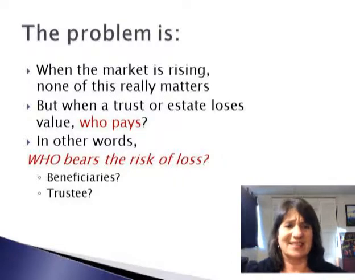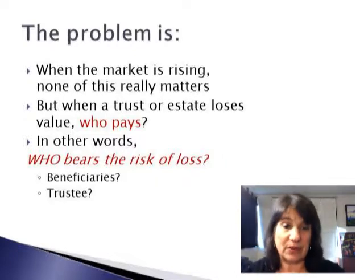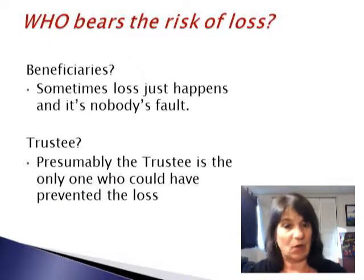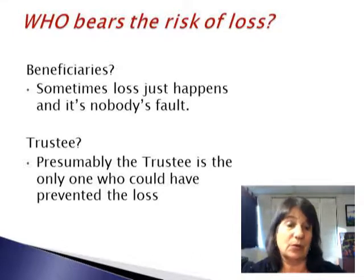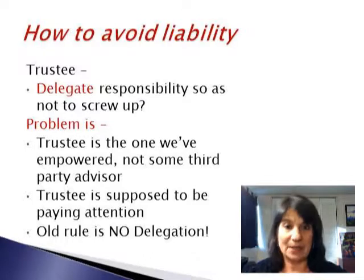The problem is when the market's rising, nobody minds if you're diversified or not. It's only when the trust or estate loses value that the question is: who pays? Who bears the risk of loss — is it the beneficiaries or is it the trustee? Sometimes loss just happens; sometimes the market goes down for everybody and we don't hold the trustee at fault for that, but that means the beneficiaries lose value. Or should it be the trustee, because the trustee is the one person who could have prevented the loss, maybe. So if you're a trustee, obviously, you want to avoid liability here.